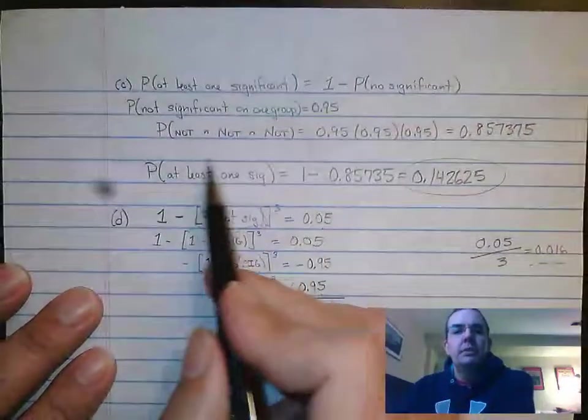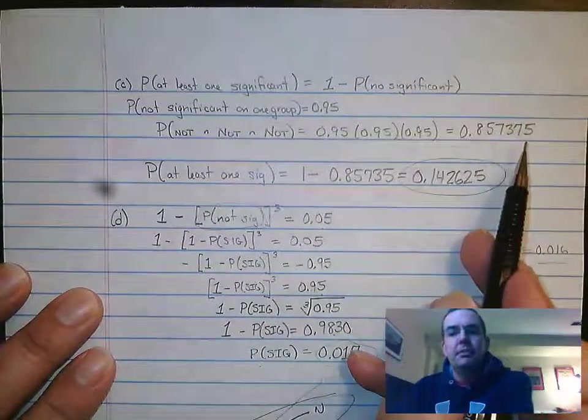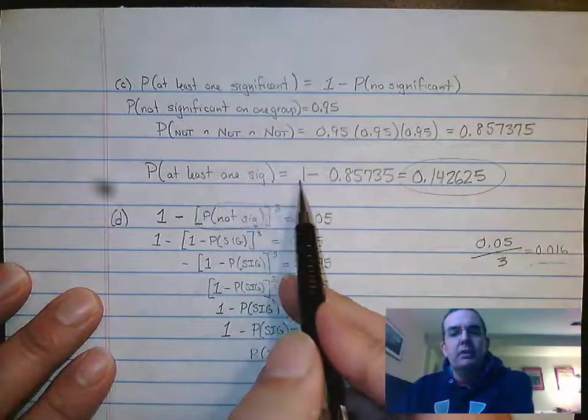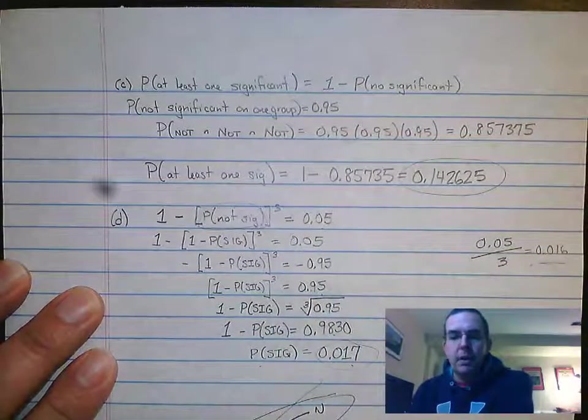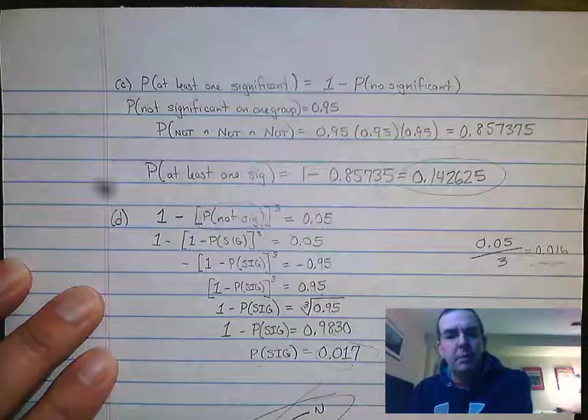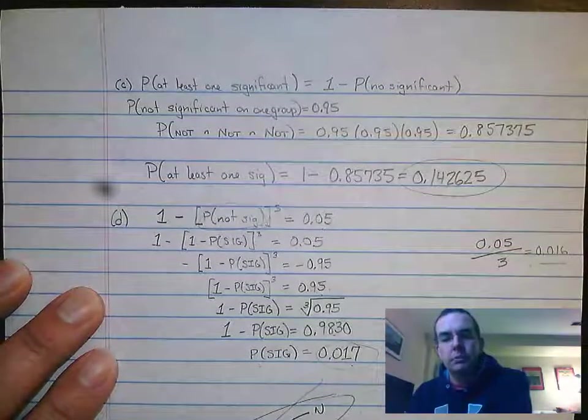When I do not and not and not, I get 0.857375. At least one significant is one minus that. Now you could have gone through and figured out every one of those other branches and added them all up—a little bit more work—but it says that my probability here is 0.142625.